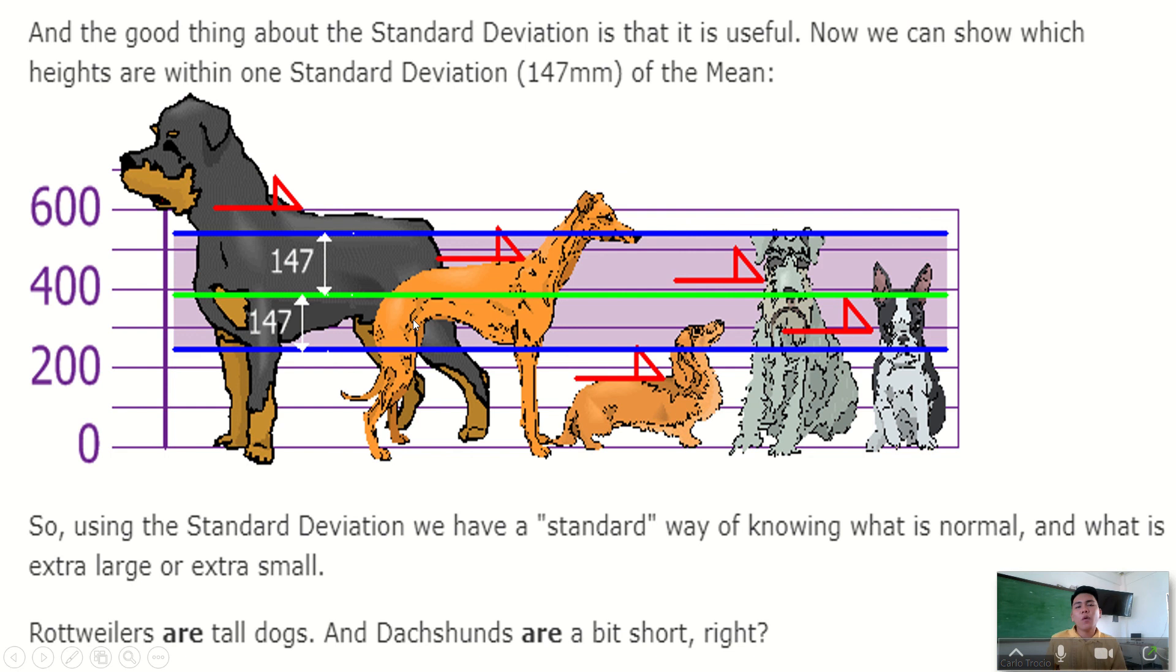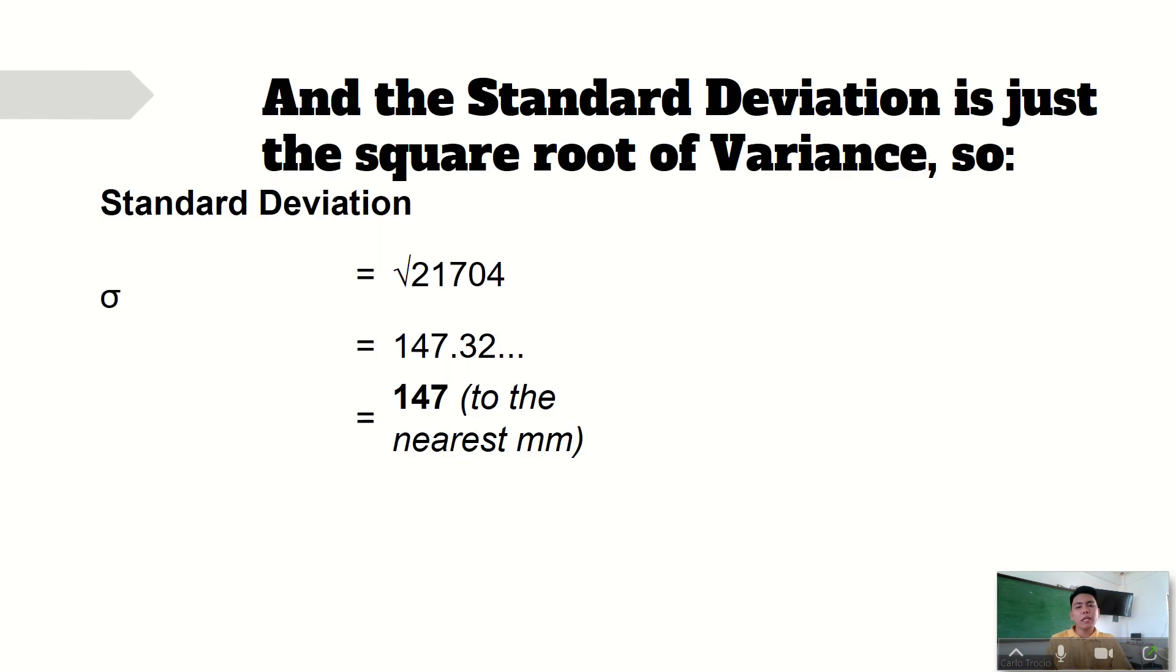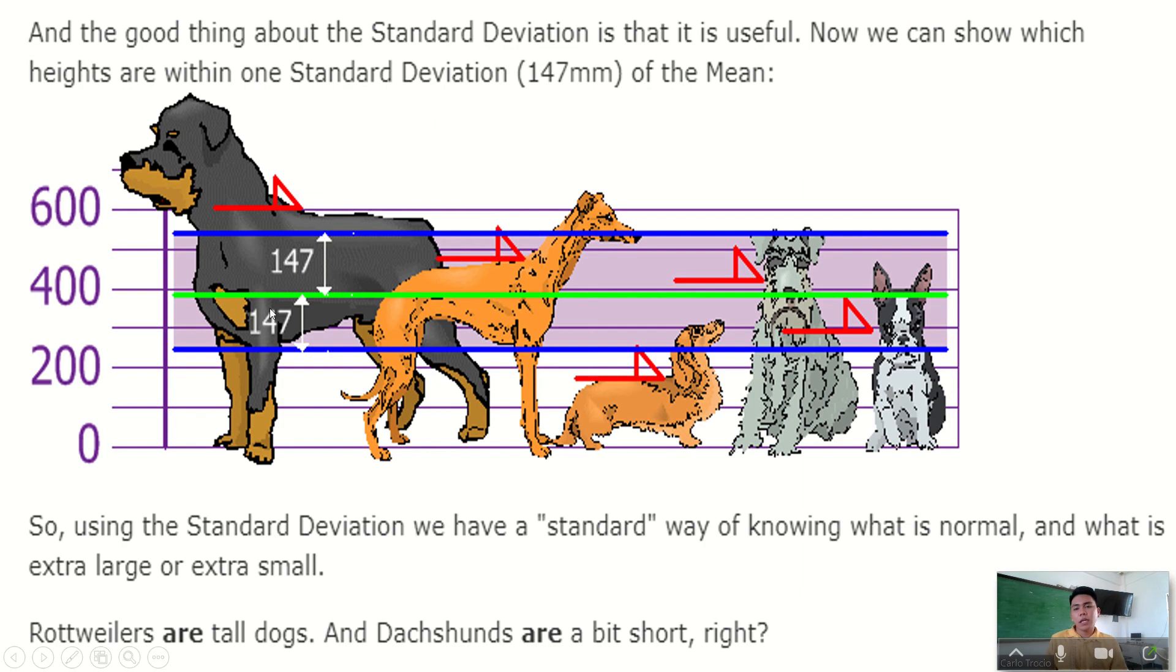As you can see here, we are standardizing. That is why it is called standard deviation, standardizing the distances from each of the data. Since you have already 147 as your standard deviation, and then you have the mean of 394, you are just going to add 394 plus 147.